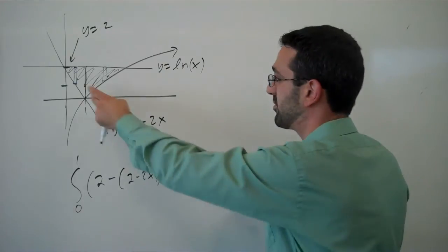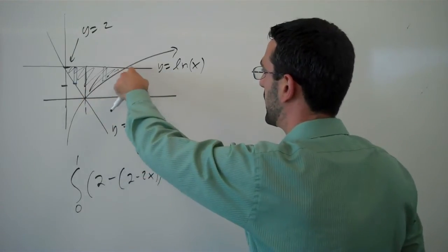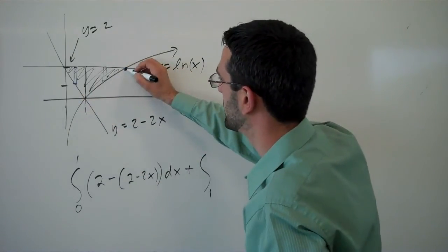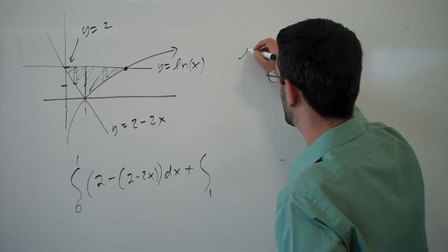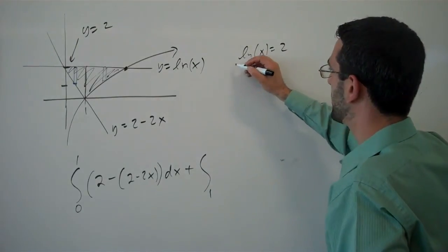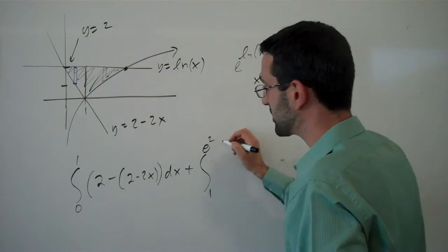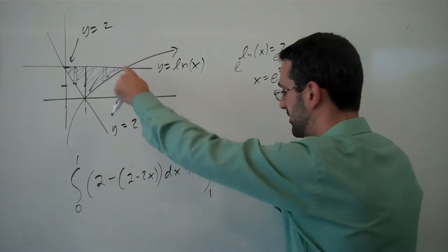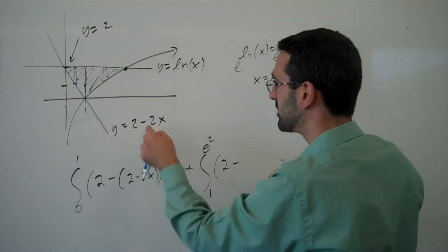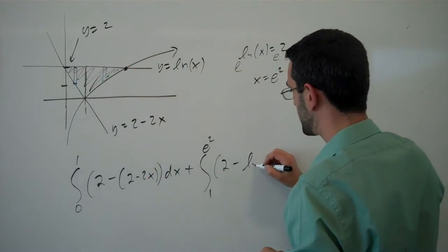And then from 1 to wherever this is. So that's where ln(x) is equal to 2. Exponentiate both sides. That's where x equals e squared. We have the function 2 on top. The function ln(x) on the bottom.